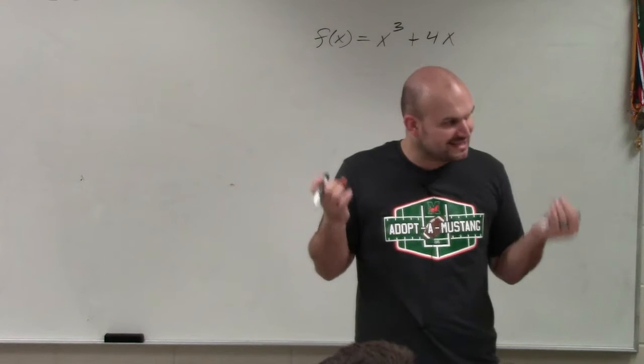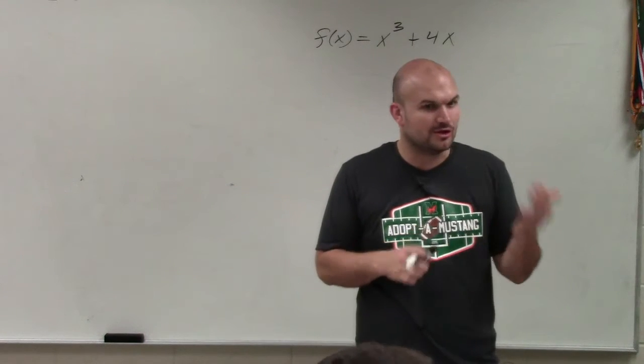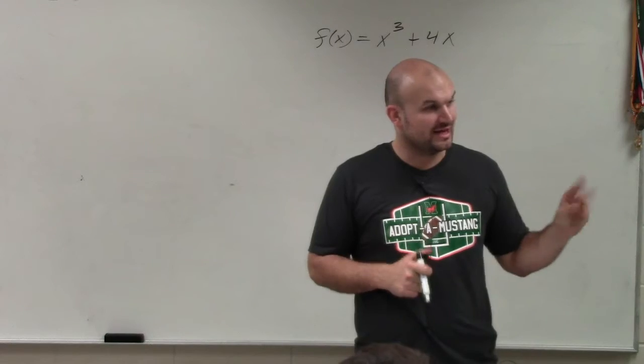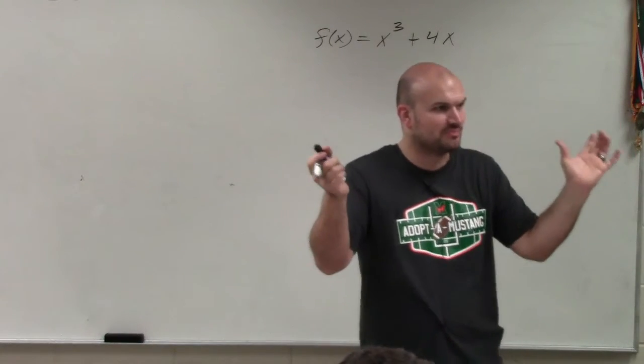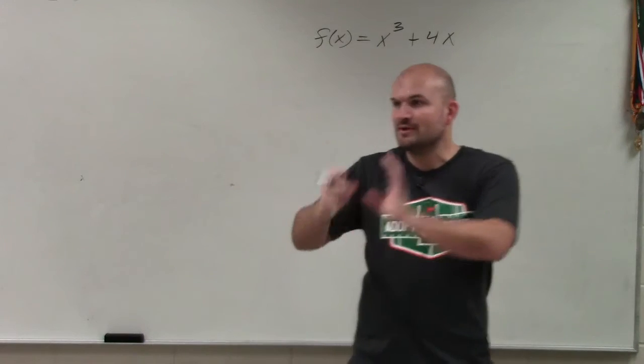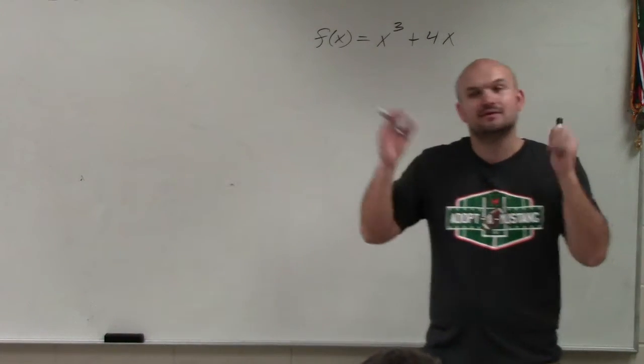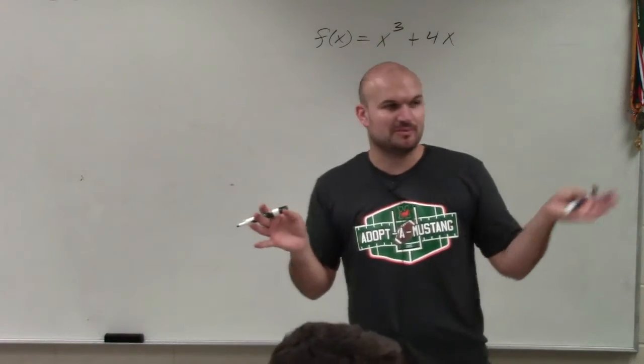When you're finding the zeros this chapter, I want you to be looking for the three ways that we've learned how to. If it's in factor form, that's the best, right? That's how we first talked about multiplicity. You have it in factored form, you use zero product property. It's really easy to find multiplicity and so forth.